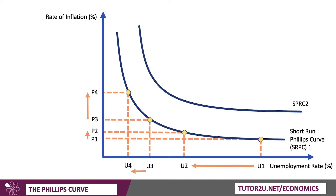Workers and firms adjust their behaviour in response to expected changes in prices. I've shifted the SRPC — the short run Phillips curve — from 1 to 2, showing an increase in expected inflation. If workers and firms expect prices to increase in the future, they may negotiate for higher wages to compensate. People are resistant to real reductions in their pay — we've seen that with the strikes in 2022 and 2023. If people negotiate higher wages, that leads to an increase in actual inflation even if unemployment is low. Taking unemployment level U3 as an example: if people expect higher inflation, wages and costs get bid up, so inflation rises to P5 at a given unemployment rate of U3. Shifts in the Phillips curve caused by changes in inflation expectations can worsen the trade-off between prices and jobs.